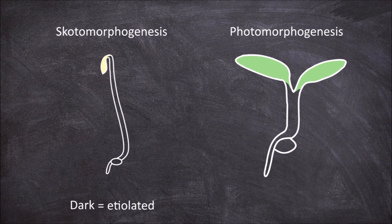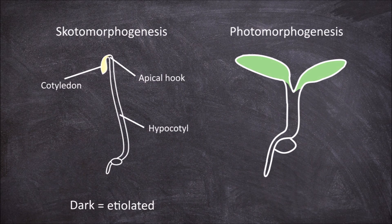These seedlings are characterized by an elongated, thin hypocotyl, the presence of an apical hook, and cotyledons that remain small and curled up. They are also yellow and cannot photosynthesize.